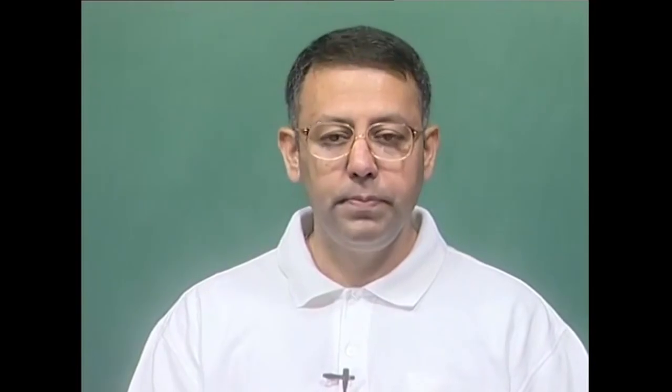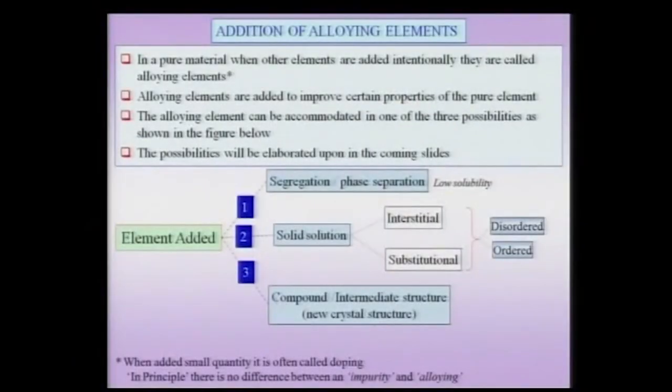The third possibility is that the alloying element can form a compound or an intermediate structure. This intermediate structure would have a new crystal structure — that means it would not correspond to the parent lattice, but would be a new structure. And we will see that these intermediate structures could be very different from the normal valency compounds which we often deal with in chemistry.